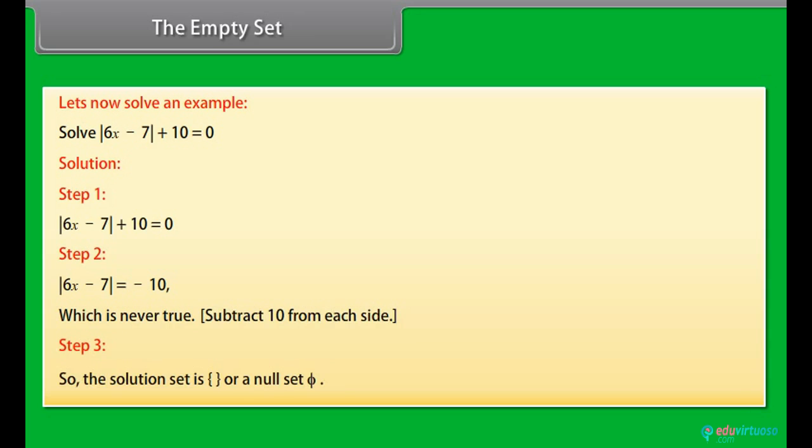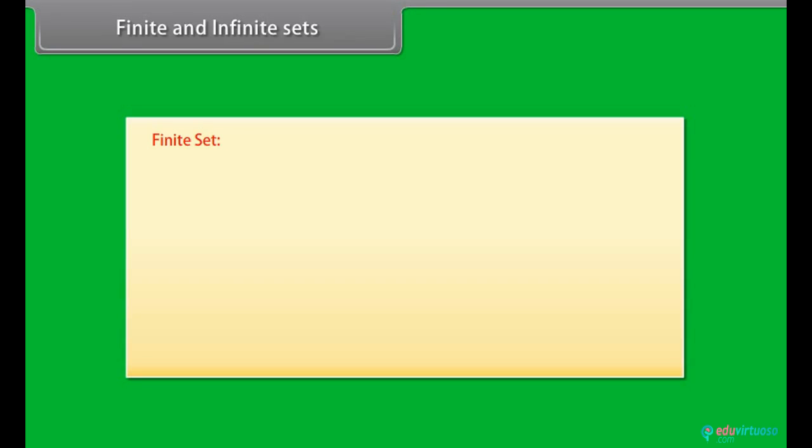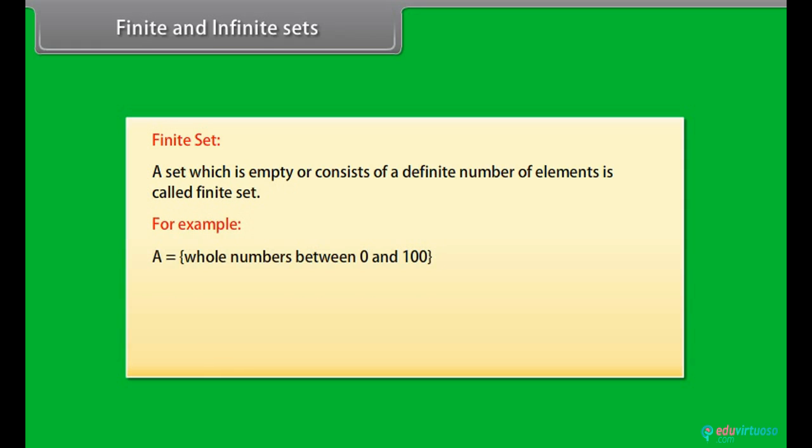Finite and infinite sets. Finite set: A set which is empty or consists of a definite number of elements is called finite set. For example, A equals whole numbers between 0 and 100, B equals primary colors, C equals prime numbers less than 12, are finite sets.